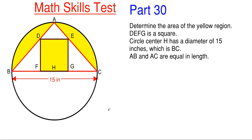What we really need to determine is the dimensions of this little square inside, because we already have the diameter for the circle. We would already have the radius, which would be the height of our triangle from A down to H — that would be 7.5 inches. Since AB and AC are equal length, A aligns directly vertical with the center of our circle at point H.